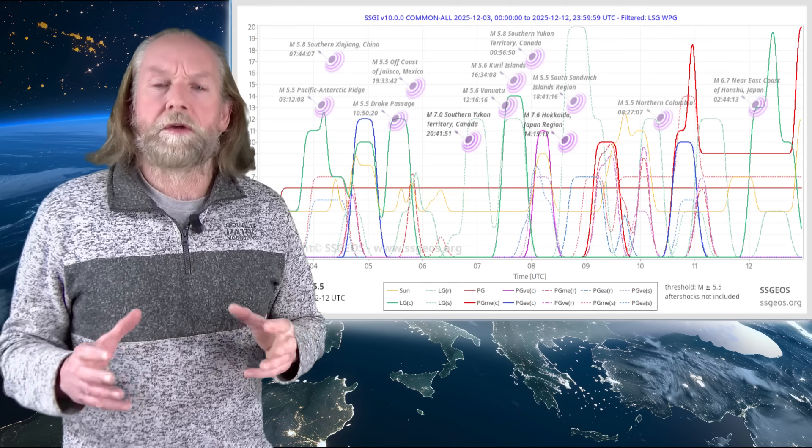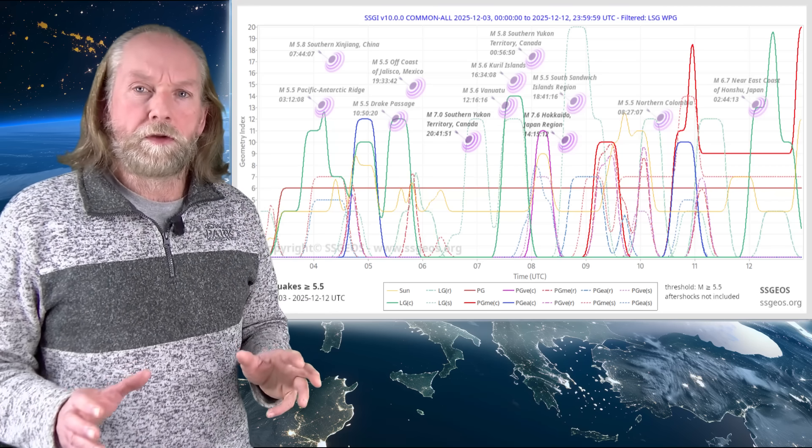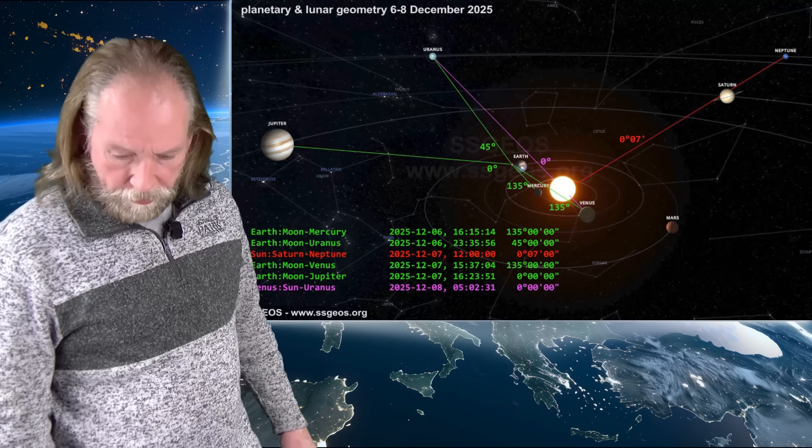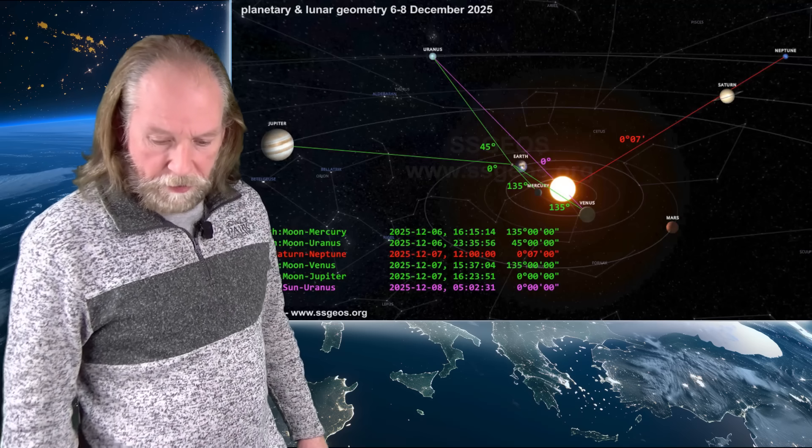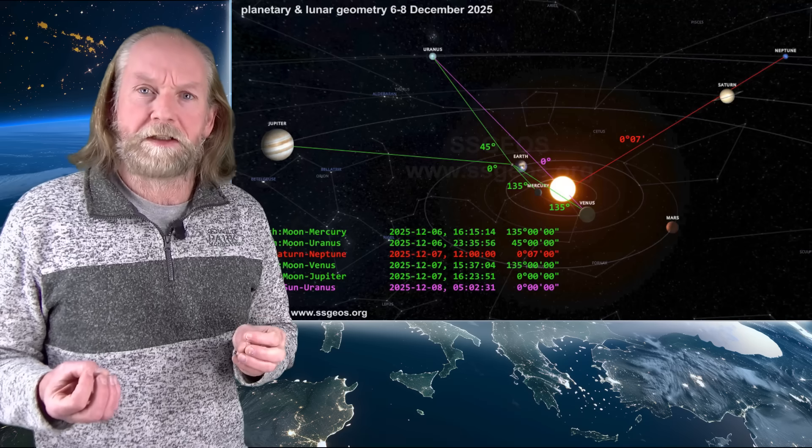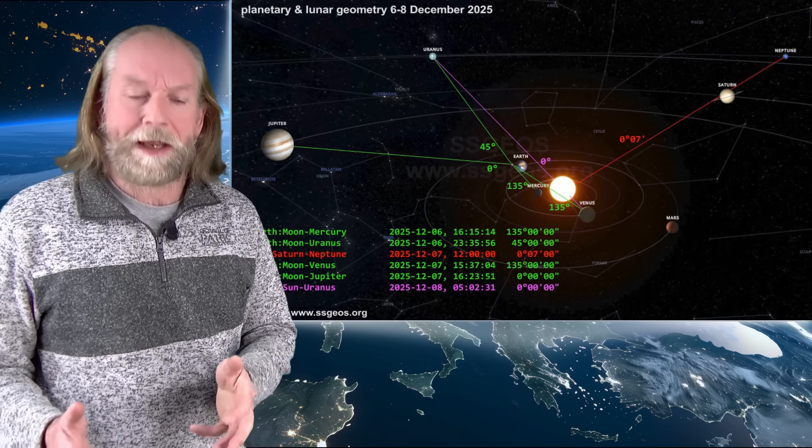So there is this temporal clustering with strong earthquakes in various locations on the planet which is very typical, a typical seismic response to the planetary and lunar geometry. So let's have a look at that geometry that happened from 6 to 8 December. This is very important because we recognize that geometry and can anticipate larger earthquakes when that kind of geometry happens.